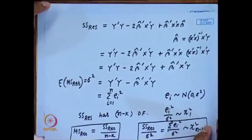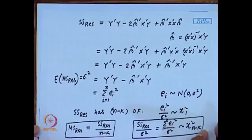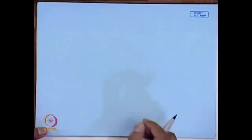Before moving to the statistical significance of the regression model, I want to give another representation of SS residual. The SS residual can be represented in several ways: simply as Σeᵢ², in matrix form as y'y - β̂'X'y, and now I will give another representation in terms of the hat matrix. I will not use this expression immediately, but will use it in the future.